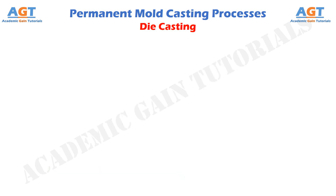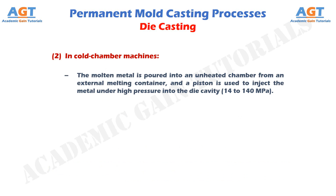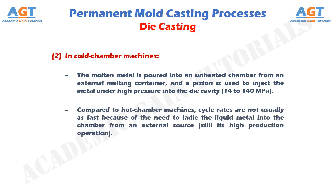In cold chamber die casting machines, the molten metal is poured into an unheated chamber from an external melting container, and a piston is used to inject the metal under high pressure into the die cavity at about 14 to 140 mega pascals. Compared to hot chamber machines, cycle rates are not usually as fast because of the need to ladle the liquid metal into the chamber from an external source, but it is still a high production operation. Typical metals for casting are aluminium, copper, zinc, and magnesium alloys.